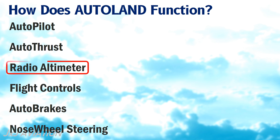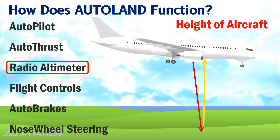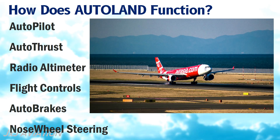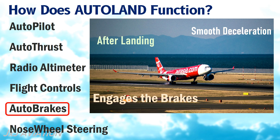The radio altimeters give a very accurate reading of the height of an aircraft from the ground. The Autoland system uses this to ensure that the aircraft is descending safely. Once the aircraft has landed, the Autoland system engages the brakes on the landing gear using the Autobrake system on the aircraft.